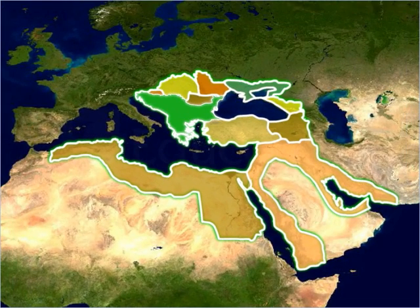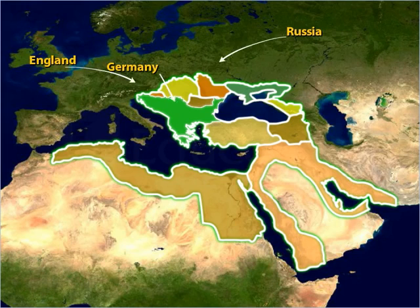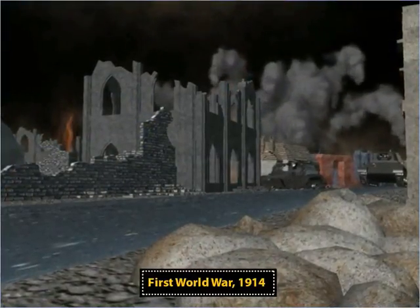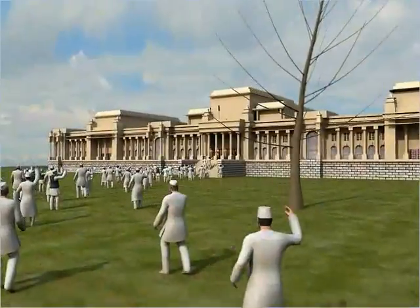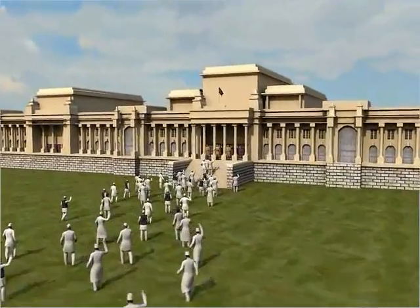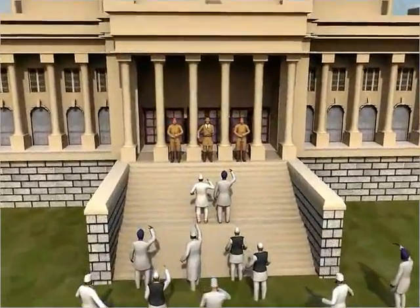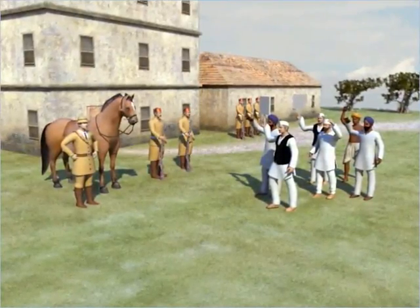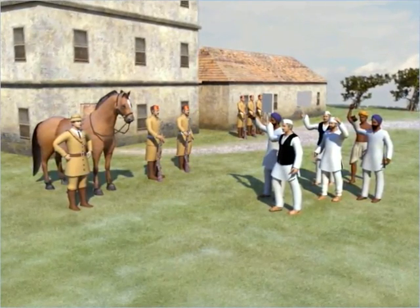Things got worse when existing great powers such as Russia, England, and Germany wanted to extend their power over the Balkan region. The Balkan wars led to the First World War in 1914, which destroyed most of Europe. Many countries colonized by European powers began to have anti-imperial movements that were nationalist in nature, as these countries wanted to break away from colonial rule and adopt the idea of nation-states.